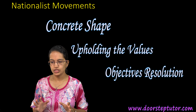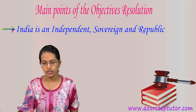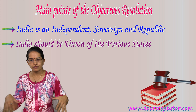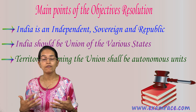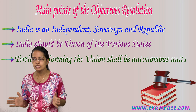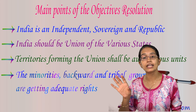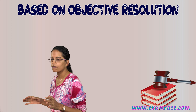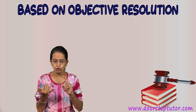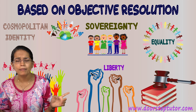These were brought through an objective resolution in India. The objective resolution believed India to be an independent, sovereign, secular nation, a union of the various states. The territories of the union should be autonomous, bringing in a kind of federal structure. It focused on securing the social and economic justice of the people, ensuring minorities, backward, and tribal groups receive adequate rights and their rights are safeguarded. Based on this objective resolution, institutional expression and fundamental commitments came in the form of equality, liberty, democracy, sovereignty, and a common identity among the people.